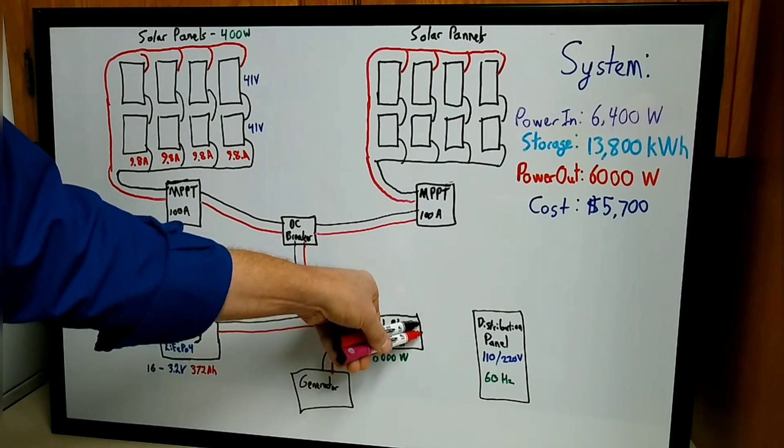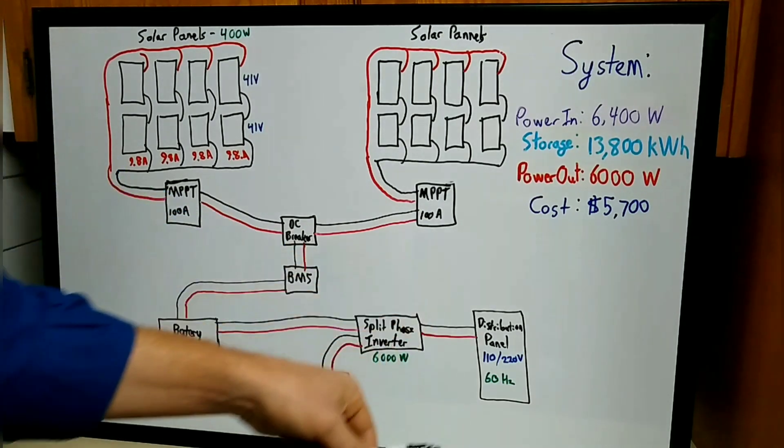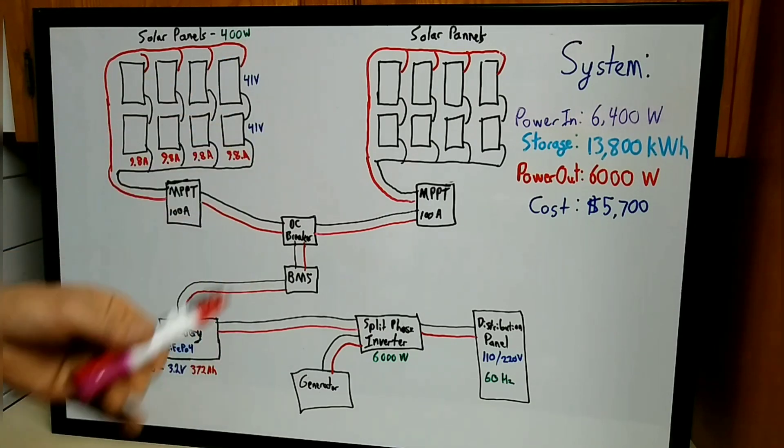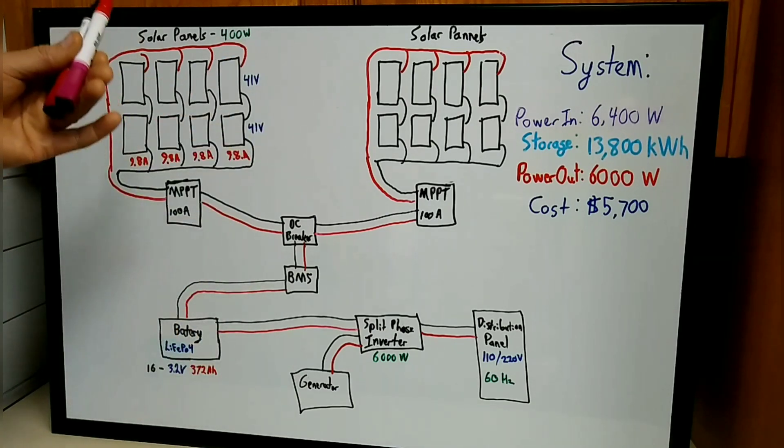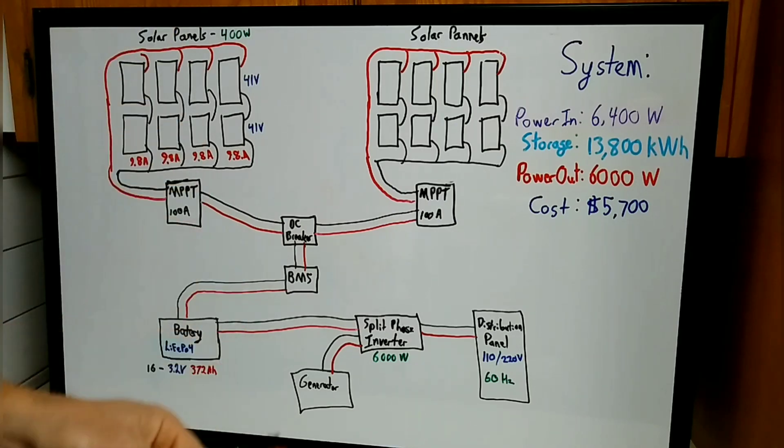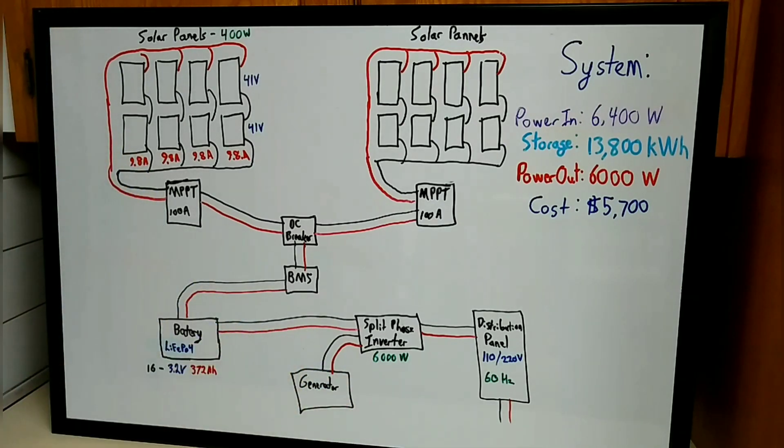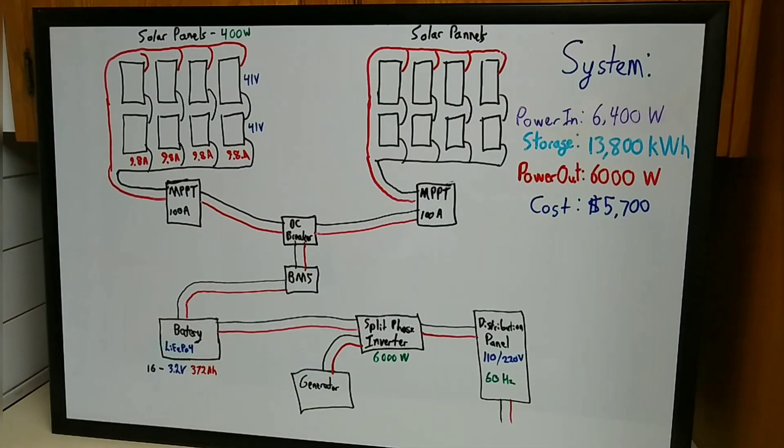You're going to come out of the inverter and go over to your distribution panel. This is basically the breaker box in your house. This is where you'll bring power out to all of your appliances in your house. Just like a regular house where you have your breaker box in the garage or whatever, you'll come out of this to all your household appliances, all your outlets for your house.